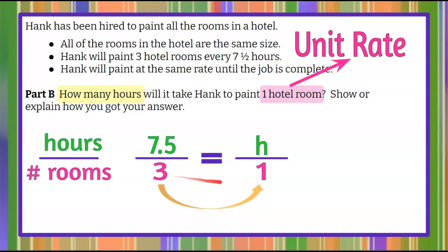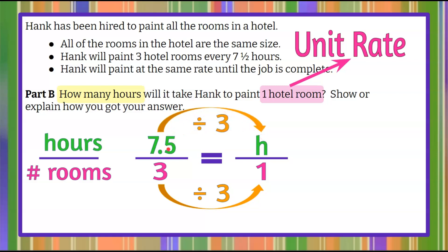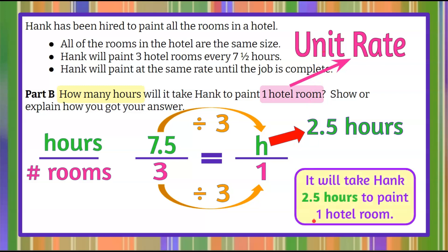Looking at the relationship: three to one requires division since one is smaller. Three divided by three is one, so the same relationship must exist between seven and a half and h. Seven and a half divided by three gives us two and a half. So the unit rate is two and a half hours to paint one hotel room.